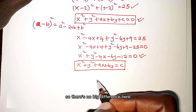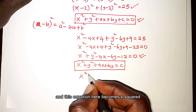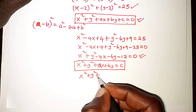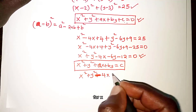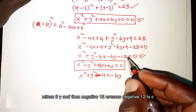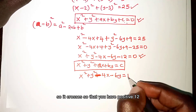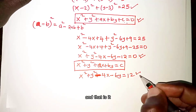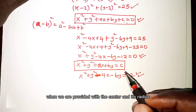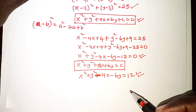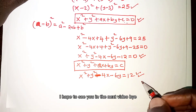There's no big difference if the question requires the form x squared plus y squared plus ax plus by equals C. We simply bring the constant term to the right-hand side, giving x squared plus y squared minus 4x minus 6y equals positive 12. This is how we determine the equation of a circle when provided with the center and its radius. Thank you for watching — I hope to see you in the next video.